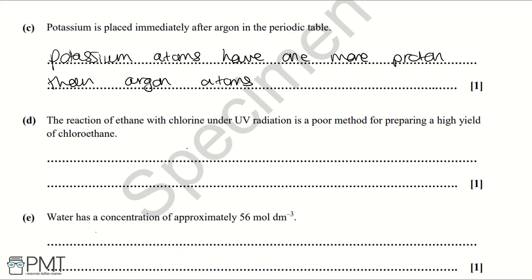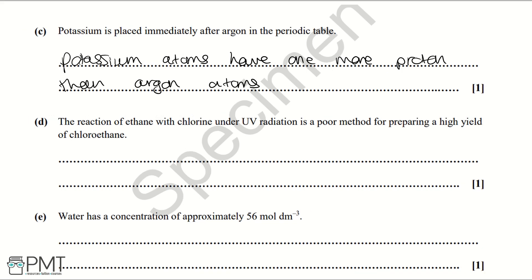Part D: the reaction of ethane with chlorine under UV radiation is a poor method for preparing a high yield of chloroethane. The reason is that further substitution occurs — this is known as free radical substitution, one of the mechanisms you'll learn about at A-level. To get the mark you must say that further substitution occurs.